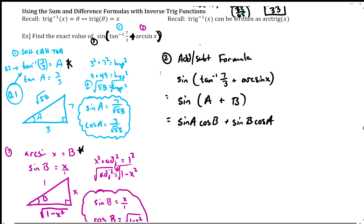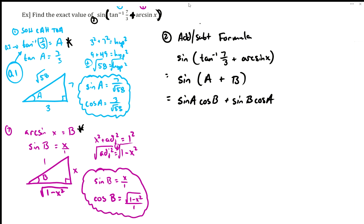Now I've got all this information in the blue and the purple that I can use to fill in. So sine of a is seven over the square root of 58, and cosine of b is the square root of one minus x squared over one. Then we've got plus sine of b, which is x over one, and cosine of a is three over square root of 58.